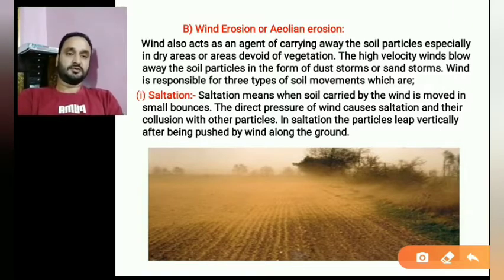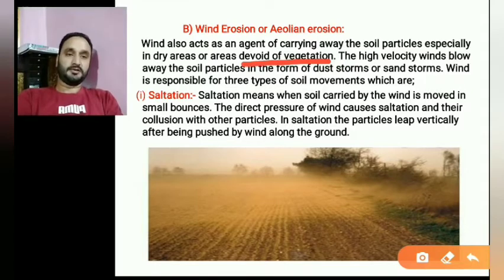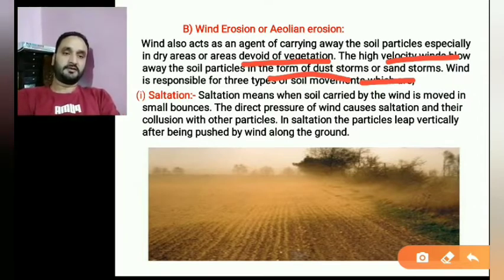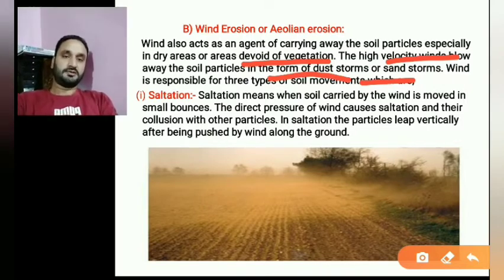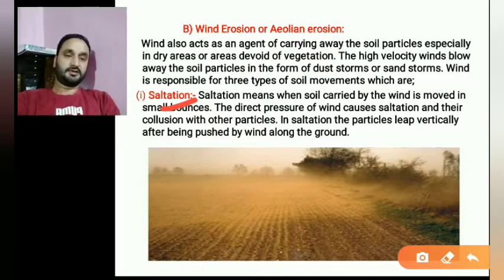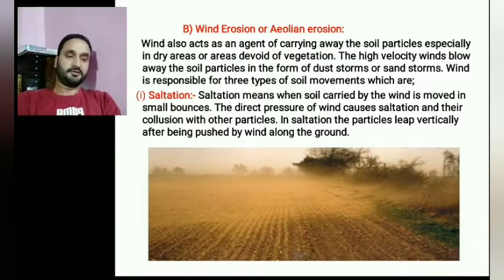Wind erosion occurs in areas that are devoid of vegetation. Where there is no vegetation cover, high velocity winds blow soil particles in the form of dust storms or sand storms. This is what amounts to wind erosion. In wind erosion, there are three types of particle movement: saltation, suspension, and surface creep.